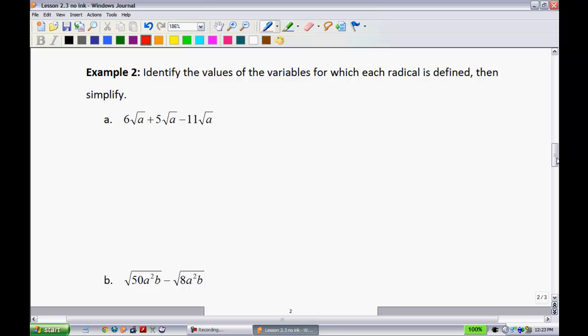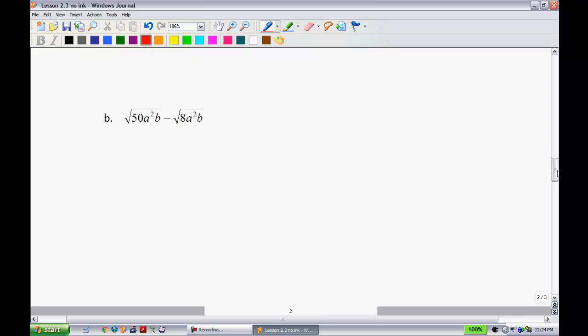All right. Example 2. So, identify the values of the variables for which each radical is defined, then simplify. So, this builds on our knowledge that we learned last unit. We have to define what we can have for a. What do we know? When we take the square root of something, it must be positive. So, you're probably getting used to this. Basically, what we know about this radical right here is that it must be positive. So, we are going to say that a must be greater than or equal to 0. So, that's like your restriction. Okay. Now, we're going to go ahead and we're going to simplify because that's what they also asked us to do. We have the same radical to the same index. 6 plus 5 is 11. 11 minus 11 is 0 root a. So, I'd have technically 0 root a, but 0 times anything is just 0. So, your answer actually is 0. Okay. With a being greater than or equal to 0 as your restriction.